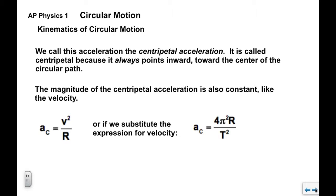We call this acceleration centripetal — the word means 'towards the center.' The centripetal acceleration always points towards the center of the circular path, no matter where the object is. Its magnitude is also constant, just like the speed. We call it a_c, and it equals v²/R. If we substitute 2πR/T for v, we get another expression: a_c = 4π²R/T². These two forms are equivalent and you can use whichever you prefer.